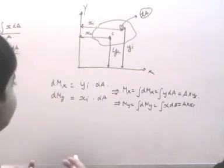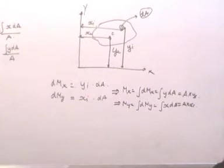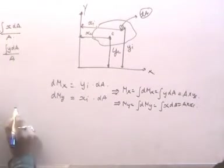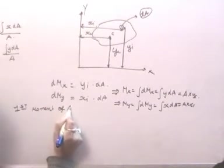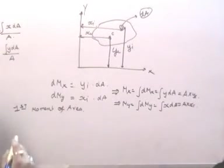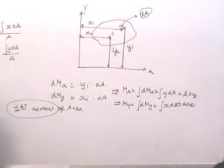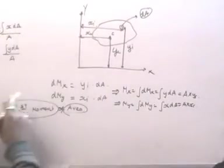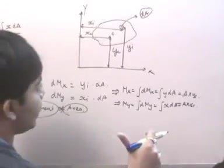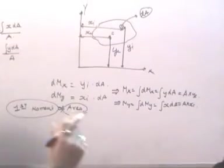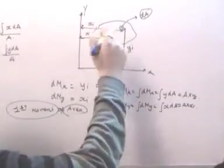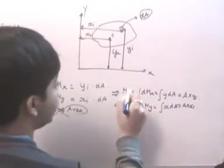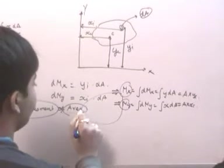The second concept to understand is the first moment of area. This term has two parts: first, the area A, and second, the first moment — which represents the total area acting through the center of gravity. The first moment essentially gives us the distance of the centroid with reference to the x-axis or y-axis. So mx and my are the first moments of area.